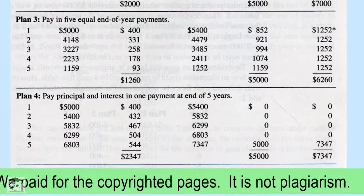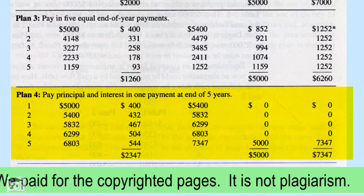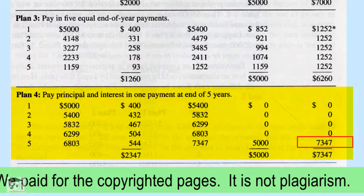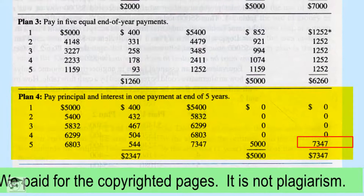The fourth plan is to pay nothing and let the interest roll into the principal and grow. Finally, pay off $7,347 to close the loan.